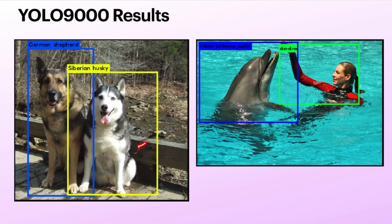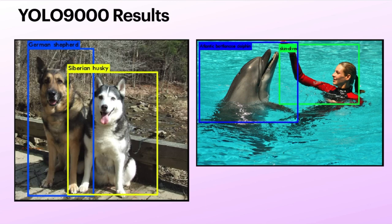Looking at the results: in one example, we have two dogs — a German Shepherd and a Husky. This is likely from the COCO dataset since it has two objects, and COCO would only have labeled them as 'dog'. But because of joint training, we are able to get finer categories along with the bounding boxes. The boxes are learned from COCO and the fine-grained labels from ImageNet. In another example, a dolphin and a person — COCO would only give 'person', but because of joint training, it was able to identify her as a skin diver and identify the specific type of dolphin.